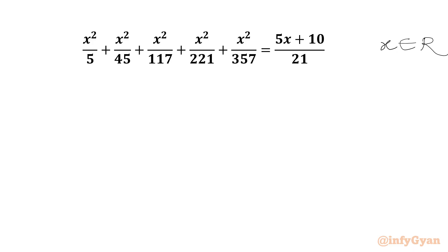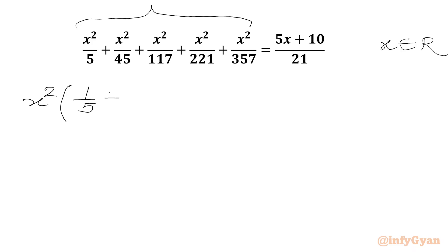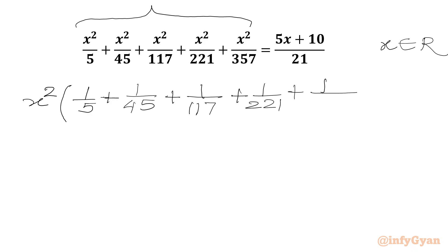Let's get started by taking x squared common from the LHS. We will write x squared common out. In the bracket we have to write 1 over 5, plus 1 over 45, plus 1 over 117, plus 1 over 221, plus 1 over 357.